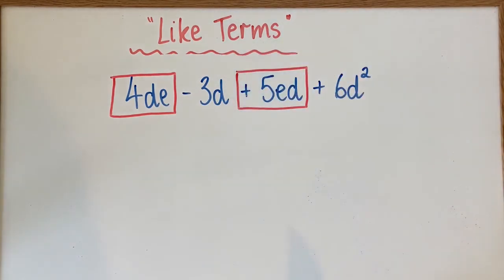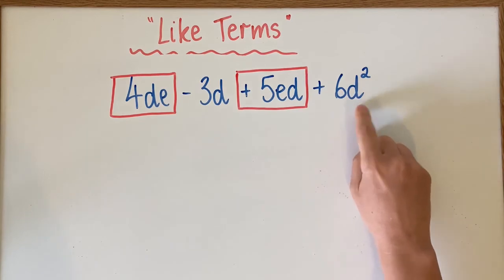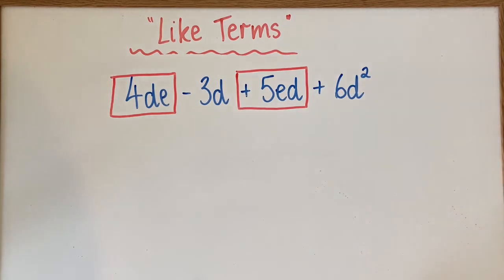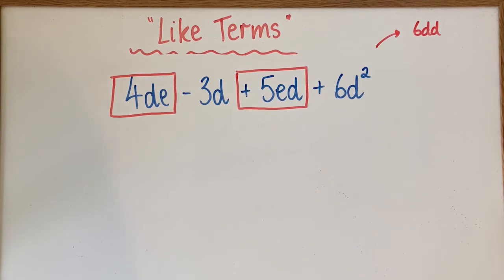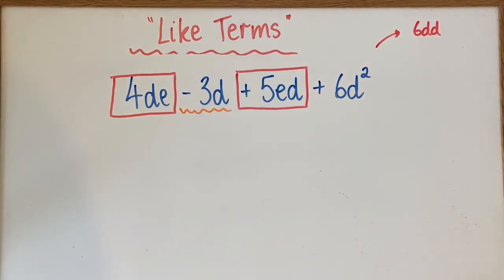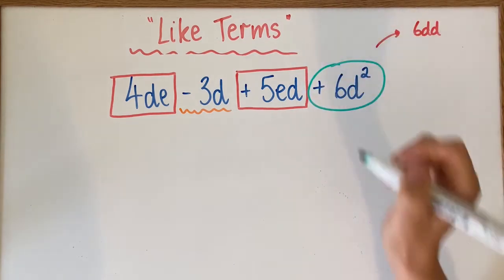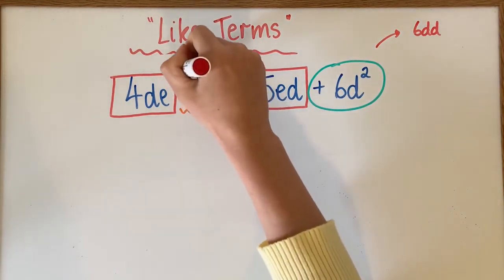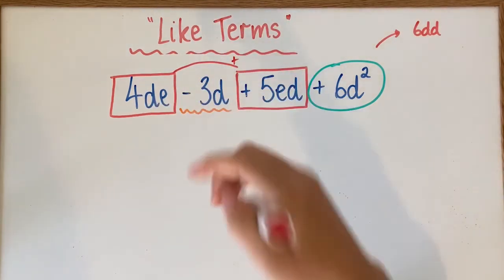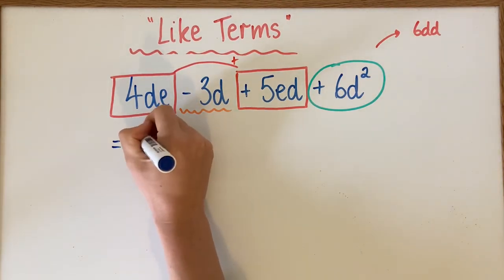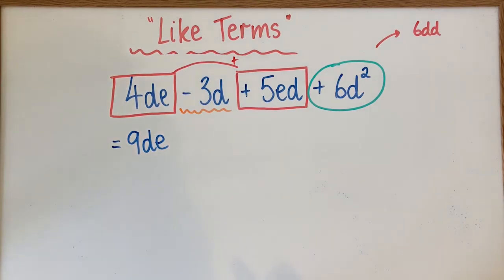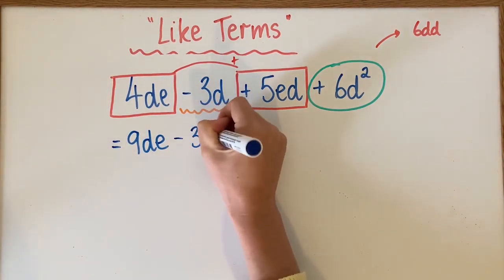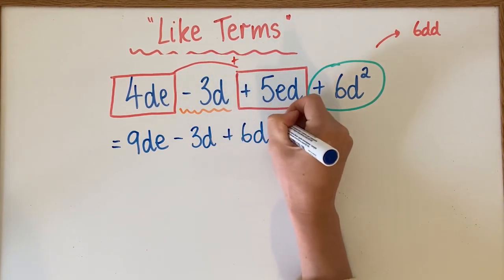Don't forget to include the sign out the front. Now you can see negative 3D and positive 6D squared. These are not like because 6D squared is really the same as 6DD, so they don't have the same pronumerals — they are both different to each other. The only things that can actually be simplified are the DE terms. We're starting at 4 and adding 5, so 4 plus 5 is 9DE. Generally we write the pronumerals in alphabetical order, but it doesn't really matter. Then you just put on the end the things that didn't have any like terms to go with them.